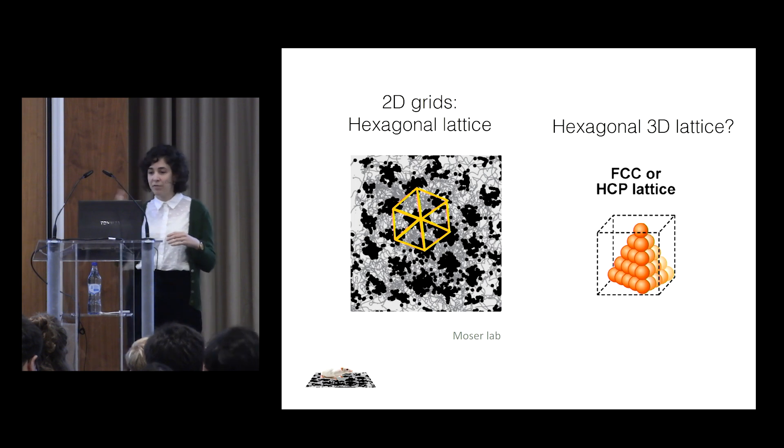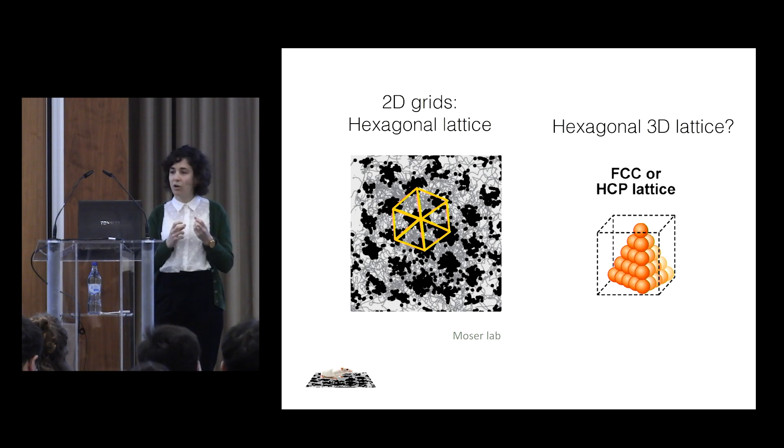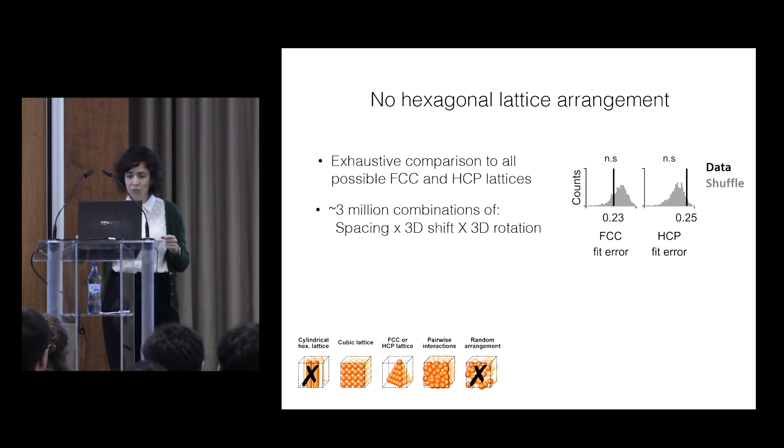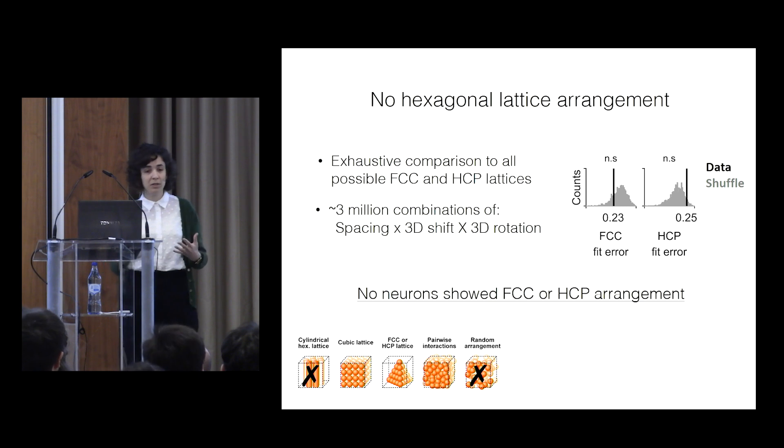The main suspects are FCC and HCP lattices, which what you need to know about them is that they're the optimal way to pack spheres in 3D. And so we did exhaustive comparisons to all possible FCC and HCP lattices, and we found no neurons showed these hexagonal lattice arrangements. And we can now cross out this option of the fields being arranged in a hexagonal lattice.